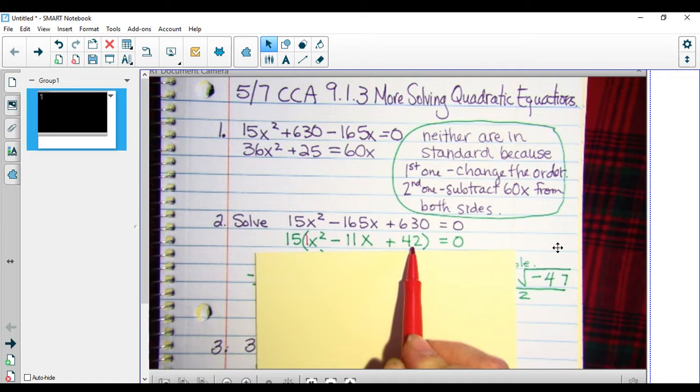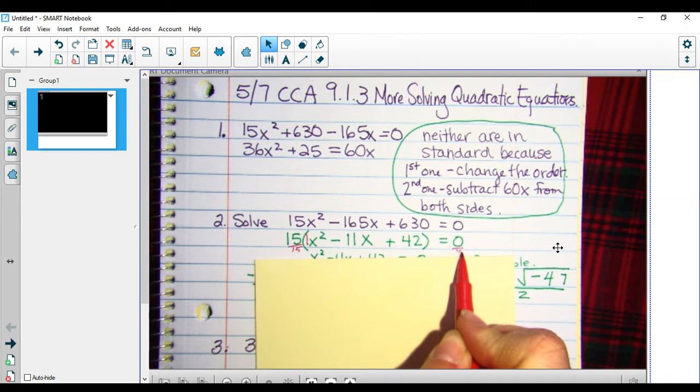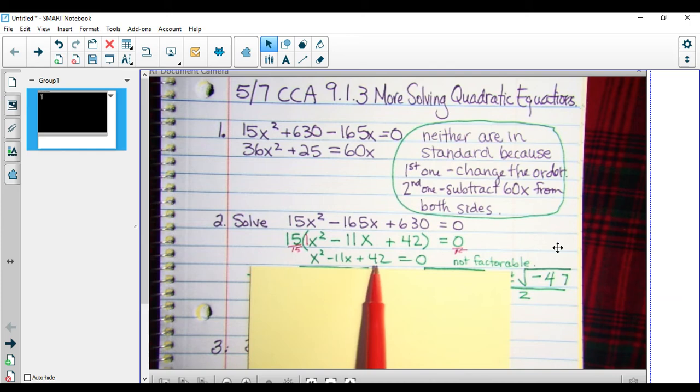And the reason I'm ignoring the 15 is because this is equal to 0. So if I divide both sides by 15, I get x squared minus 11x plus 42 equals 0.